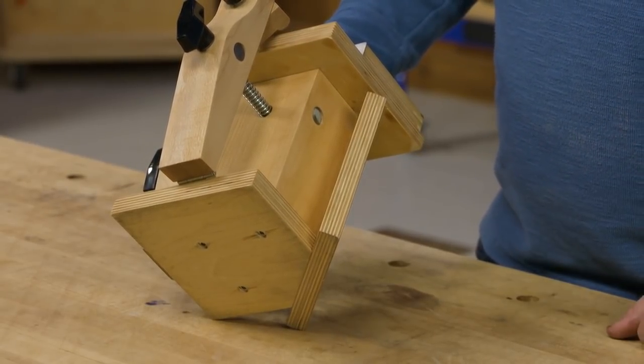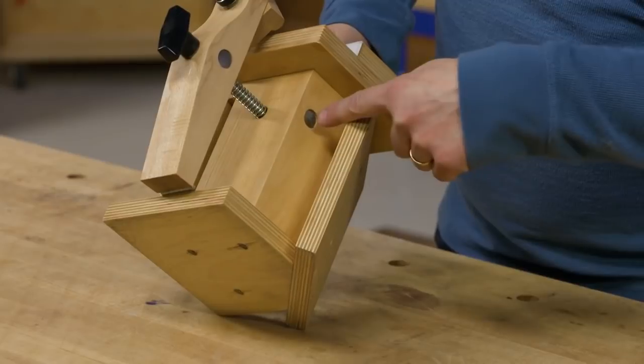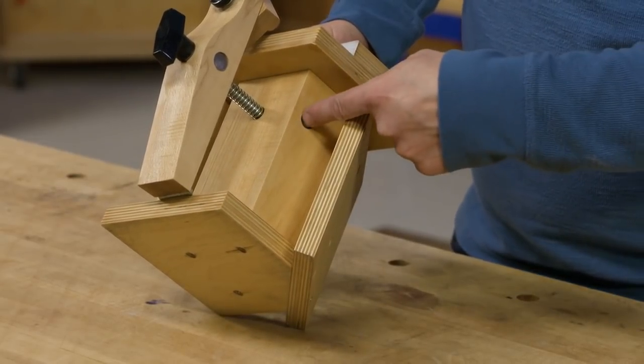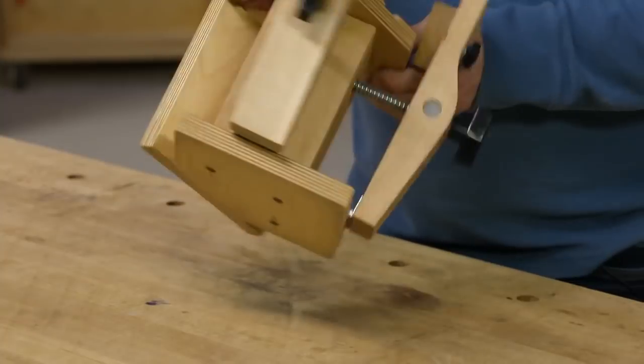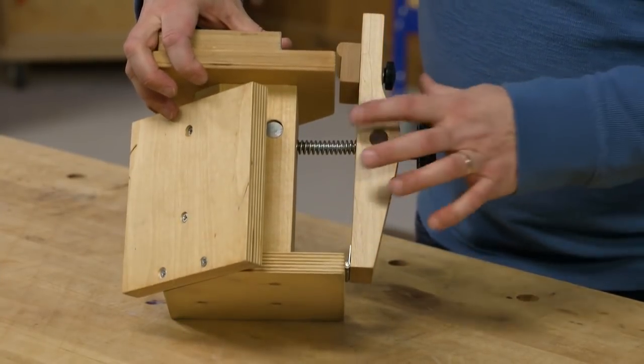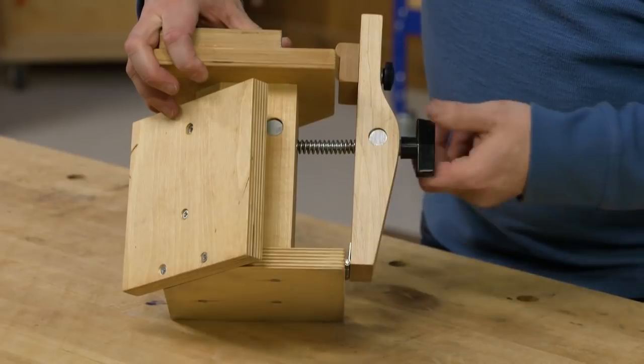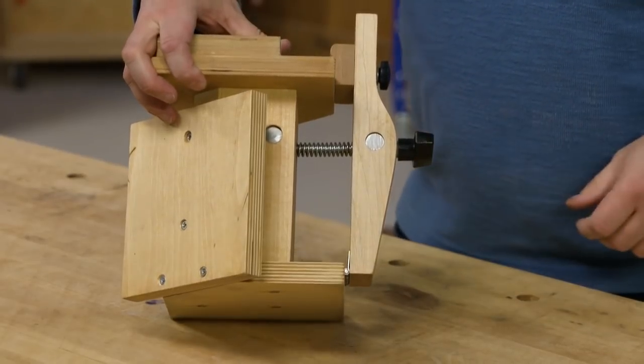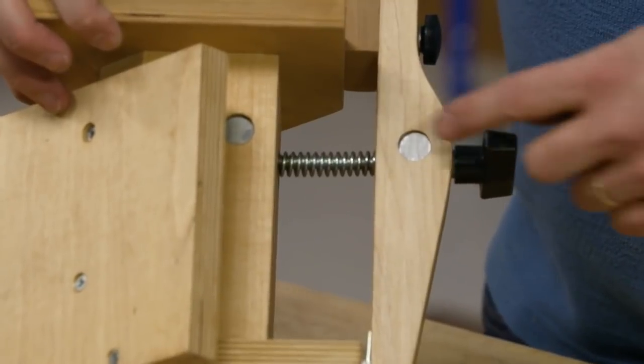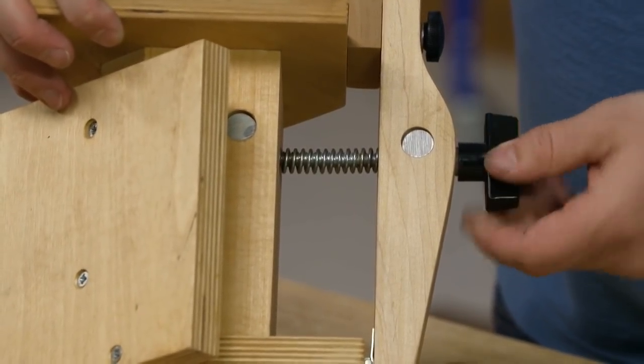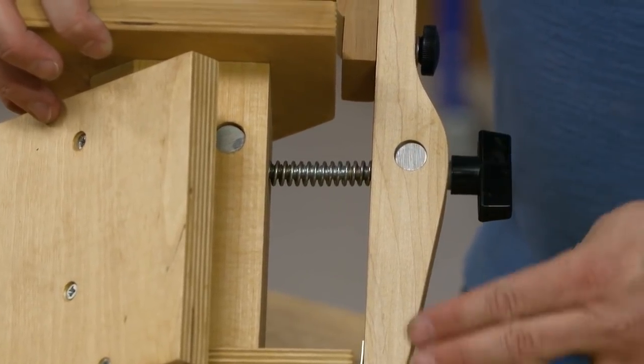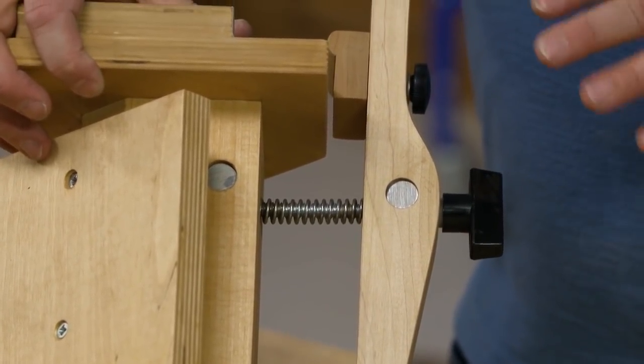You glue it up and then you drill a hole for a cross dowel in each of the two faces, so there's one there and then one on that side. That cross dowel is threaded to accept a long clamping knob. You can use epoxy to glue that in if you can't find ones that are long enough.